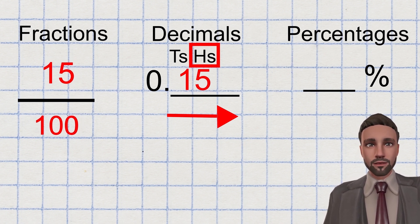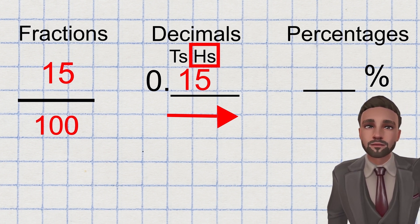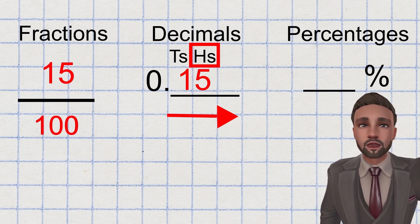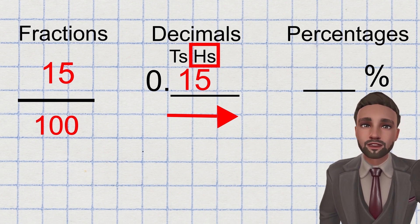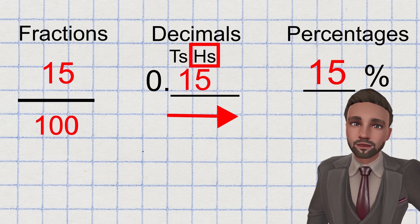Then percentages. As we know, the percentage is out of 100. And our fraction that we currently have is also out of 100. So whatever we have as our numerator is the percentage that we've got, because they both represent how many parts that we have. So 15 out of 100 fraction is the same as 15%, because 15 per 100 as a percentage.